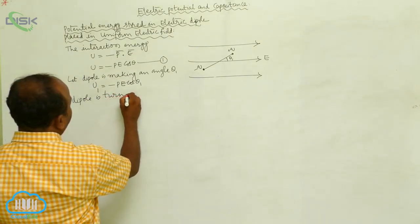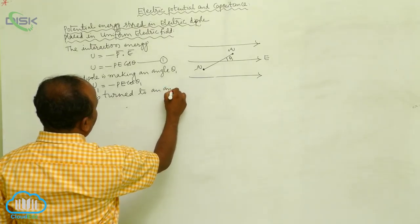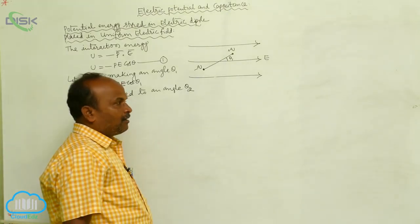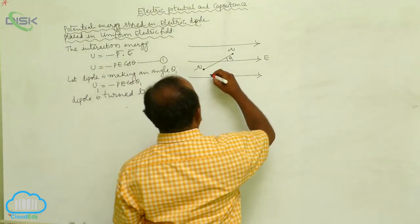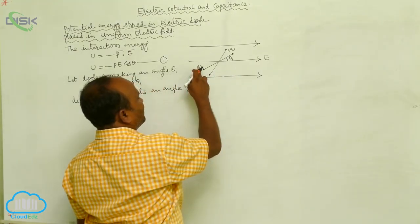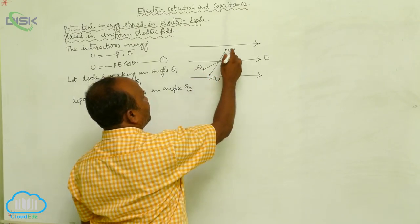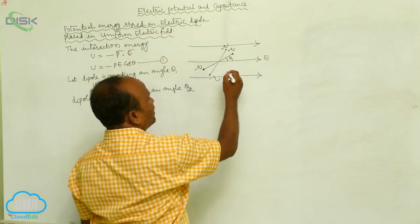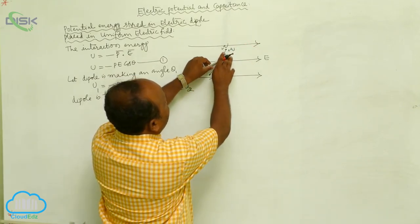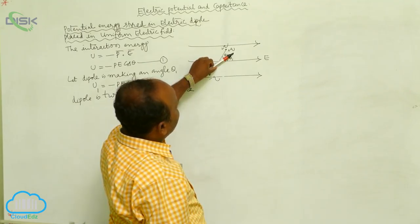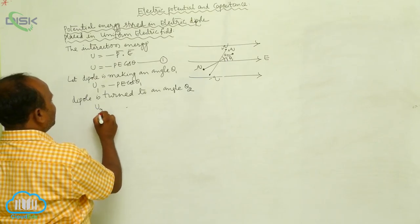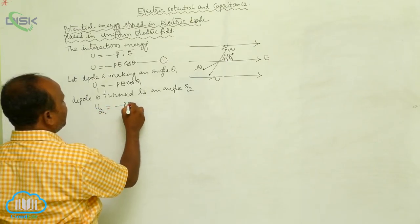The dipole is then rotated to an angle theta 2 with respect to the electric field intensity. As the dipole is rotated, the negative charge and positive charge move to new positions. The interaction energy at this new position is U₂ equal to minus PE cos theta 2.